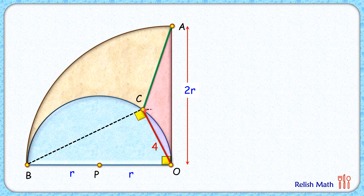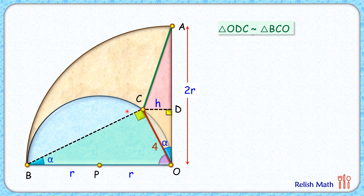From point C, let's drop a perpendicular on AO and assume this length CD as h centimeters — that's also the height of the triangle. Assuming one angle as alpha, the remaining angle in the triangle is 90 minus alpha. By angle-angle similarity, triangle ODC is similar to triangle BCO — these green and yellow triangles are similar.